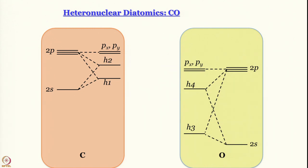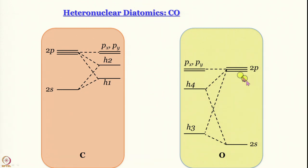There is an objection: why do we use H3 and H4 for oxygen? When we discussed homonuclear diatomics, we said that sp mixing does not even take place for oxygen — so why would it here? One argument is that CO is isoelectronic with N2: oxygen has one electron more and carbon has one electron less, so the oxygen atom should behave like a carbon atom in this context.